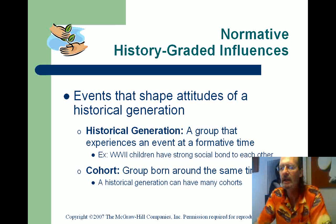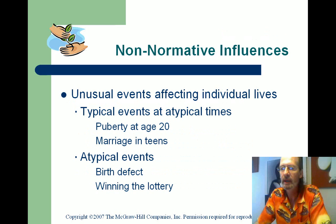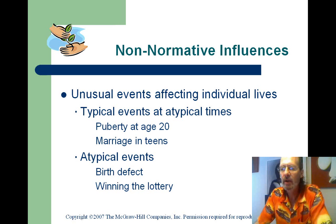Non-normative influences are unusual events affecting individuals' lives — things that generally happen to everybody but at different times, like puberty at age 20 or for girls at age 8. Early puberty for females tends to be a pretty negative thing with lots of negative impacts. It can also be atypical events like birth defects, which impact not only the person but their family, or winning the lottery — these events can be either positive or negative.